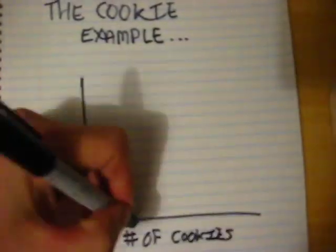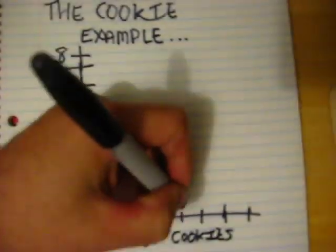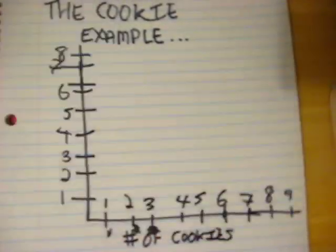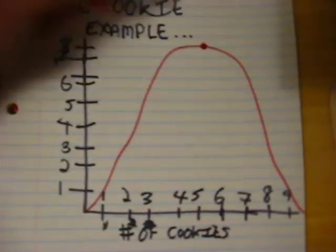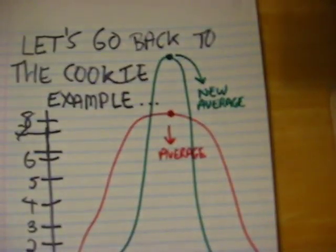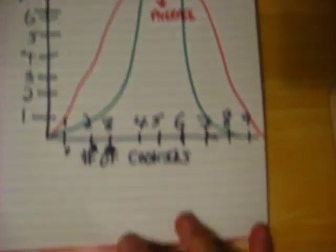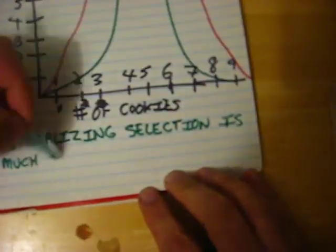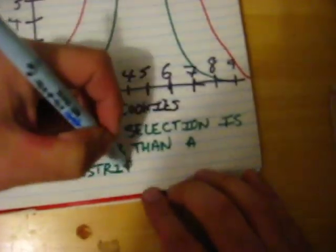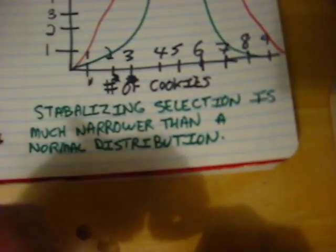Going back to the cookie example: instead of the regular average of around three or four cookies, let's say doctors now say cookies are good for you. This might increase the number of people eating a lot of cookies, creating a new average. This is called stabilizing selection, because the distribution becomes much narrower than the normal distribution — concentrated more tightly in the middle.